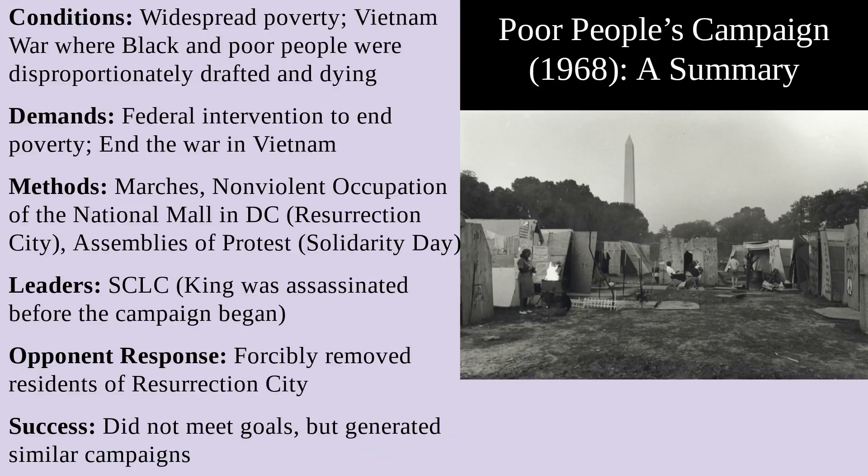Him and Bayard Rustin had that analysis. The Southern Industrial Leadership Conference was planning a nonviolent occupation of the National Mall in D.C., known as Resurrection City. King, however, was assassinated before the campaign began. He was in Memphis, Tennessee, supporting the struggle of sanitation workers in Memphis.